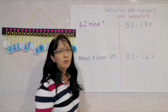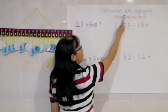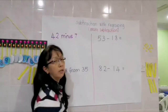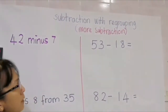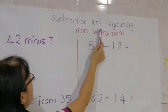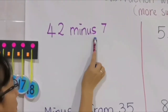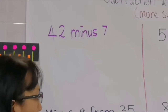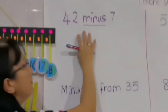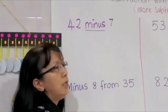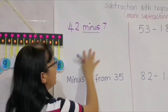In class today we are going to learn subtraction with regrouping, or in your activity book it says 'more subtraction.' We will learn more about what subtraction with regrouping means. First, you see the question here: 42 minus 7. The minus sign means the answer will become less — it is the same meaning as subtraction. So now, how do we want to find the answer here?